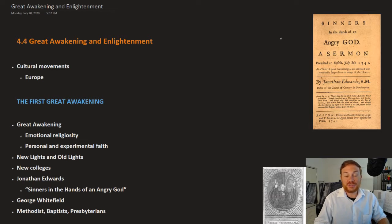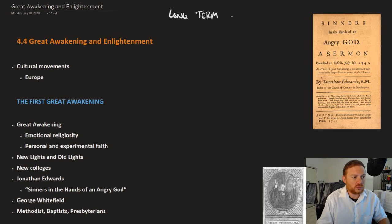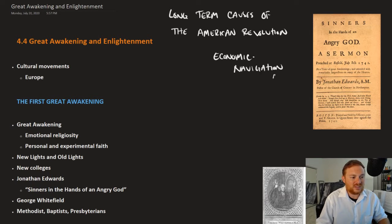One of the things in this chapter that is focused on are the long-term causes of the American Revolution. We had already started to talk about one of those, and that is economic, specifically the Navigation Acts and the way that British interference with trade really disrupted and angered a lot of the colonists.